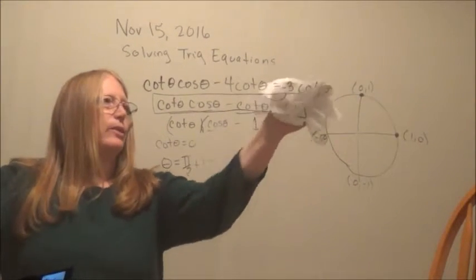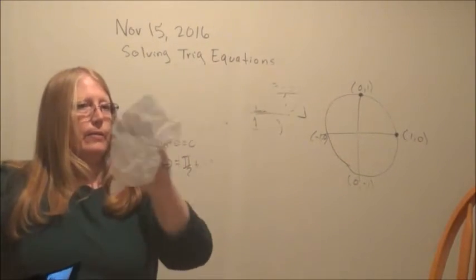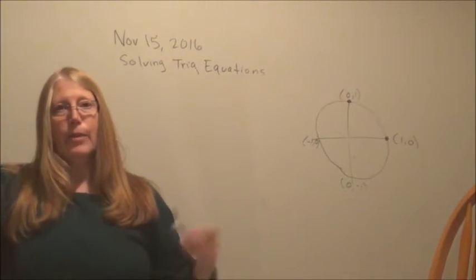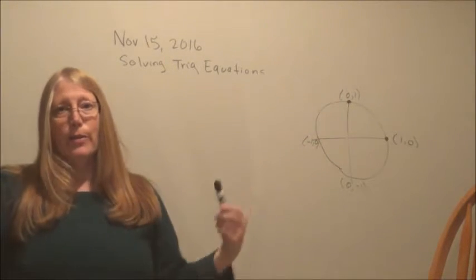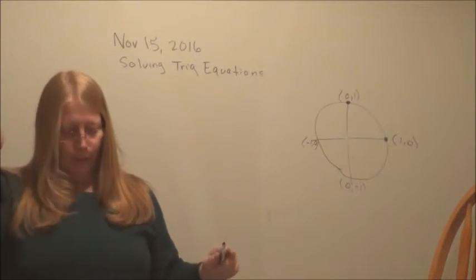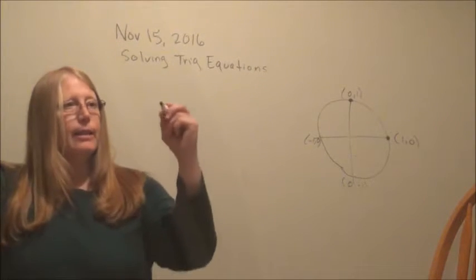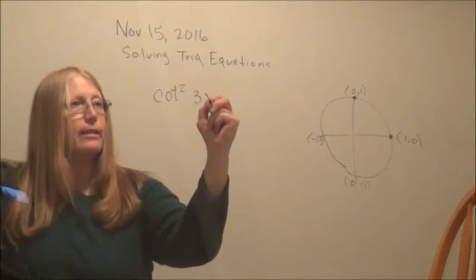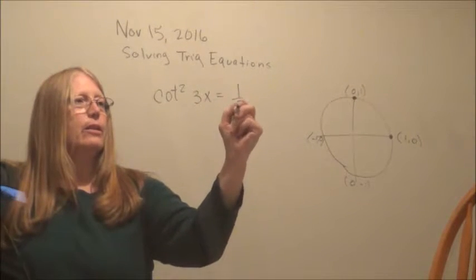Last one. Notice how I just write the part of the unit circle that I am using. I don't usually fill in the whole thing, because every problem has its own little spot on the unit circle. I recommend that. But, last but not least, cotangent squared of 3x equals 1 third.